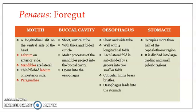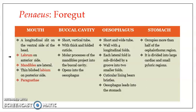Now, what are the peculiar features of all these parts? The foregut is composed of mouth, buccal cavity, esophagus, and stomach. The mouth is a longitudinal slit on the mid-ventral side of the head, positioned mid-ventrally between the third and the fourth cephalic segments. The body of Penaeus is divided into a cephalothoracic region and abdomen. On the anterior side, almost like an upper lip, there is a structure known as the labrum.